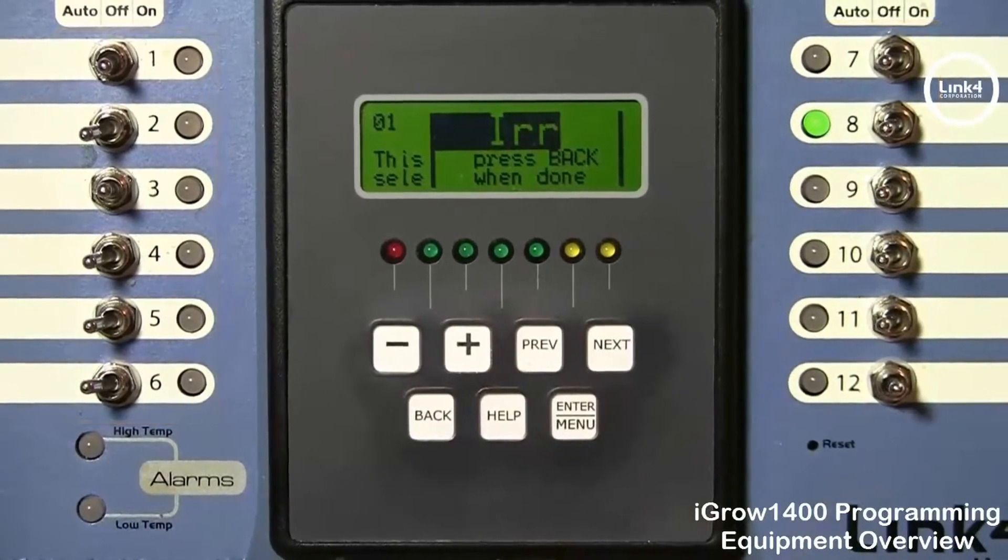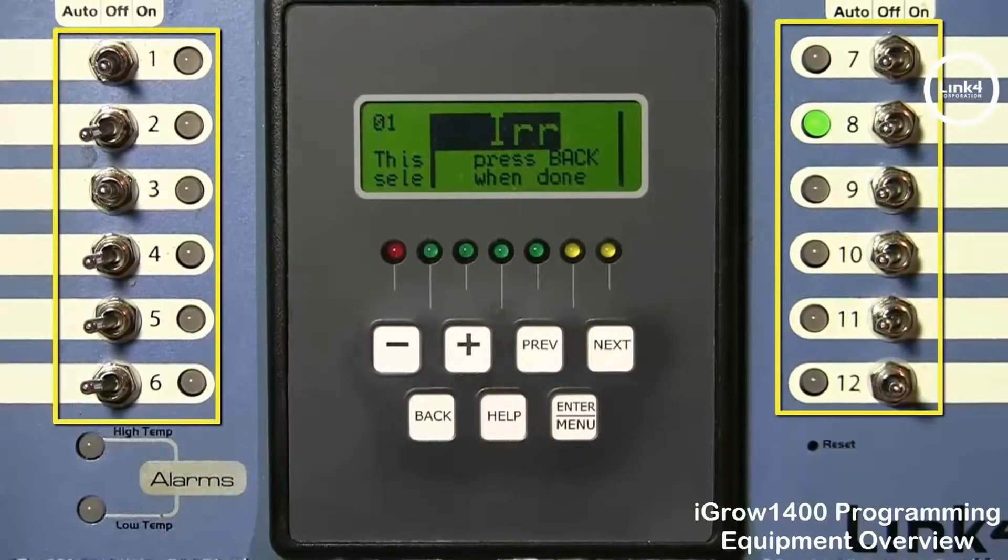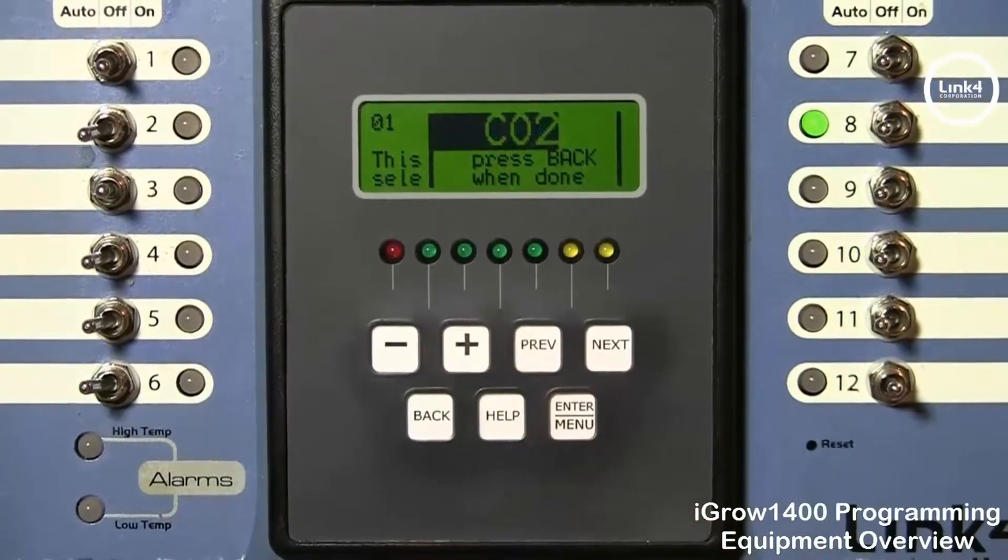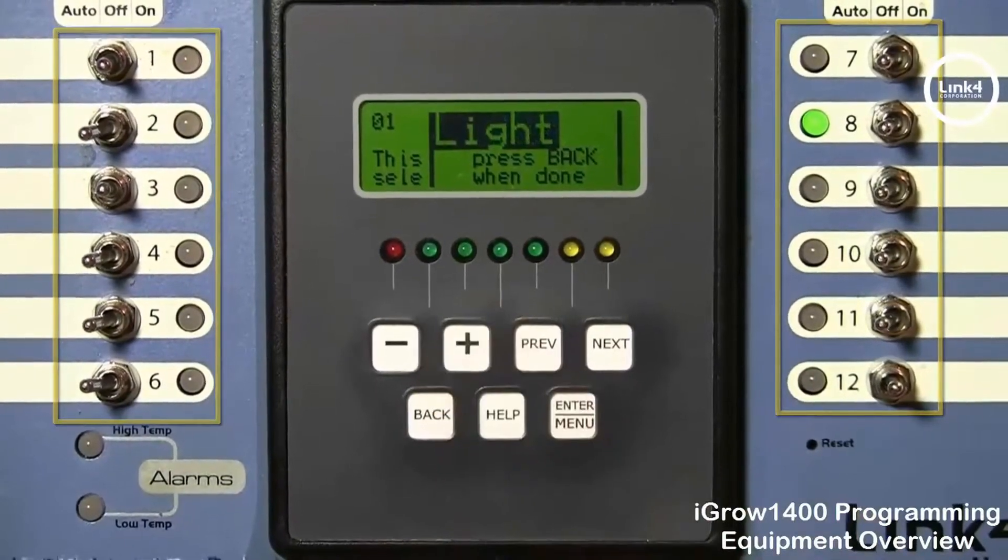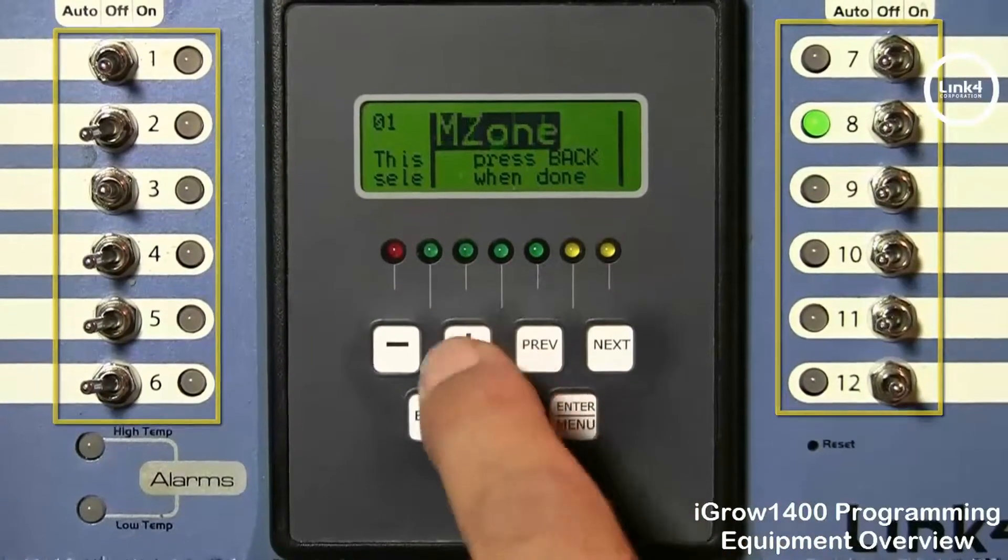You have irrigation with several different modes which can be programmed on any channel. You have CO2 which you could program in any channel. You have light operations that you could program on any channel.